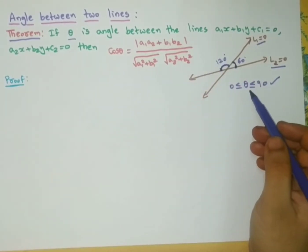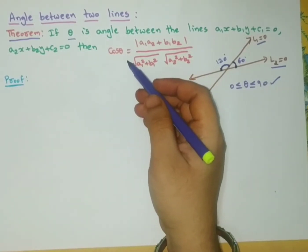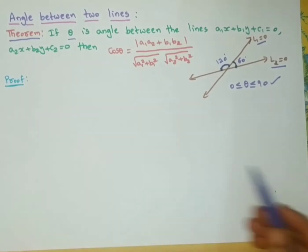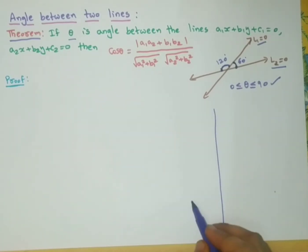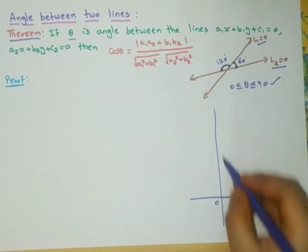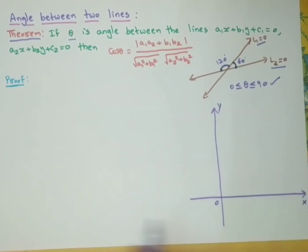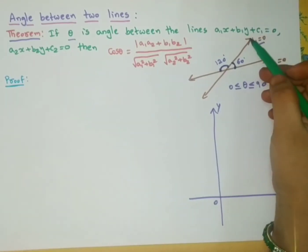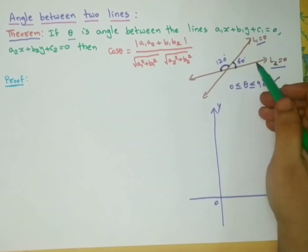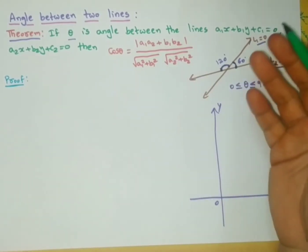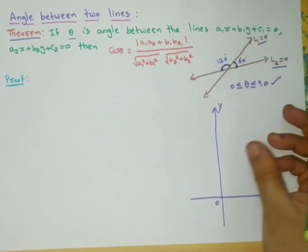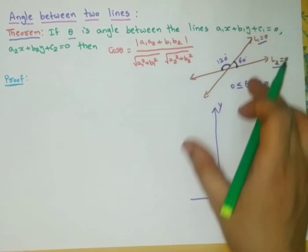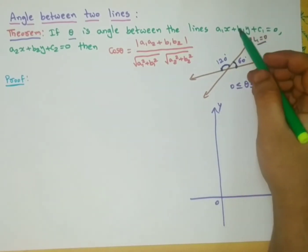To derive this formula for calculating the angle between two given lines, let us consider the coordinate axes — X axis and Y axis. Instead of taking the lines anywhere in the plane, we take lines which are parallel to the given straight lines and passing through the origin.